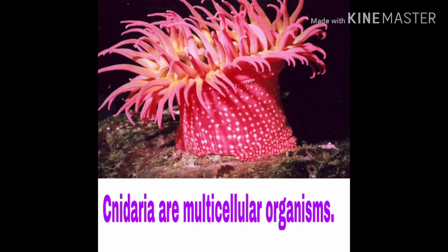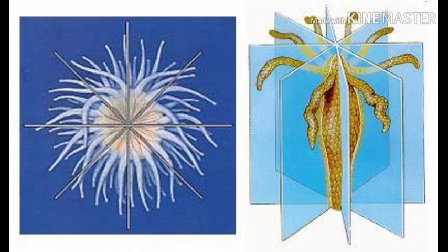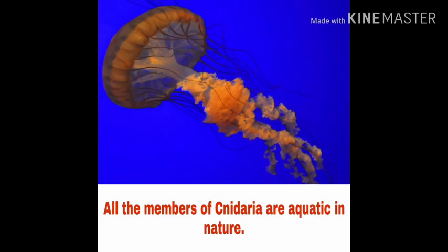Second point: Cnidaria are multicellular organisms, meaning they are made up of a group of cells. Third point: the body of Cnidaria is radially symmetrical, meaning we can cut Cnidarians in the shape of a wheel of a bicycle.